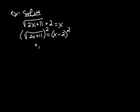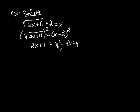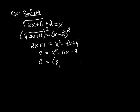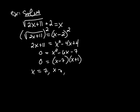The square root of 2x plus 11, when squared, gives 2x plus 11. The right-hand side, when squared, gives x squared minus 4x plus 4. Now we have a quadratic equation. We get everything on one side by subtracting 2x and 11 from both sides, giving us 0 equals x squared minus 6x minus 7. Factoring the right-hand side: 0 equals x minus 7 times x plus 1, giving us x equals 7 and x equals negative 1.